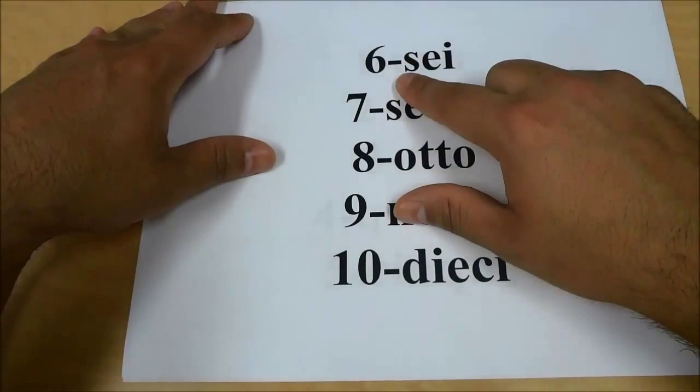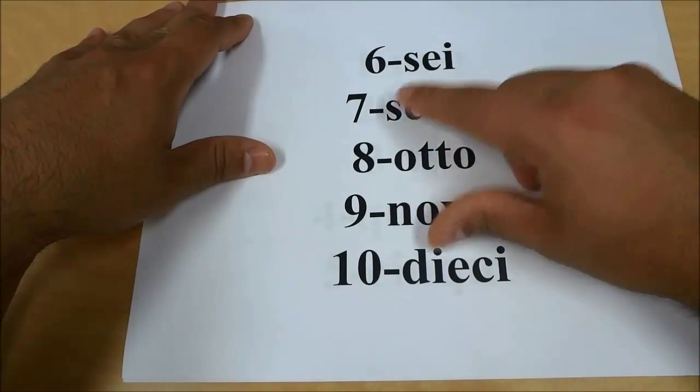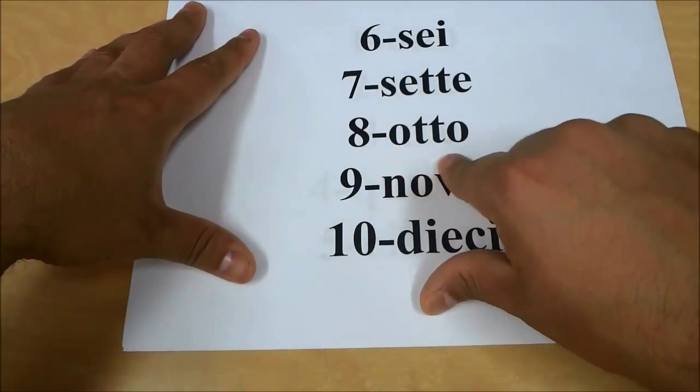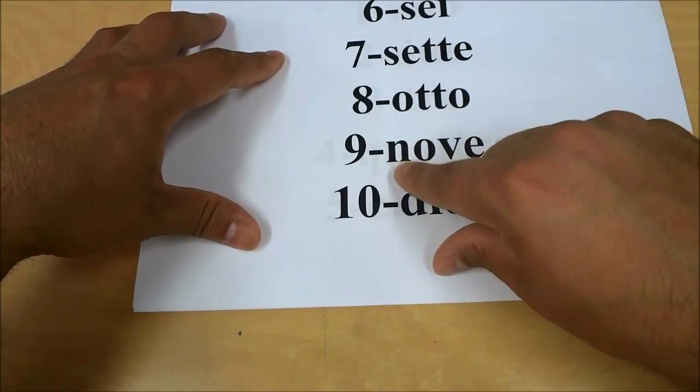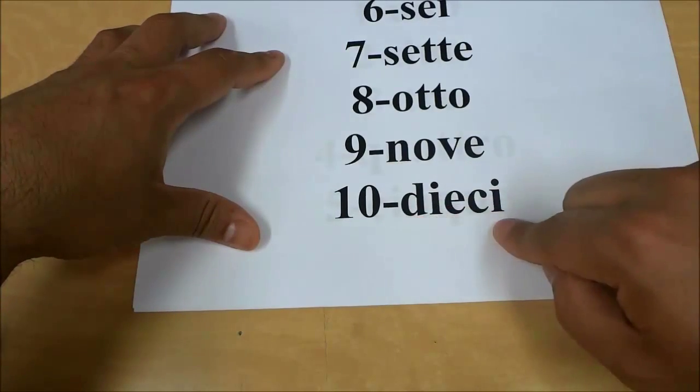and I'll just flip the page to get to the following five. Sei, sei, sette, sette, otto, otto, nove, nove, dieci, dieci.